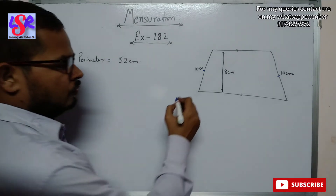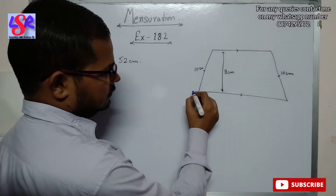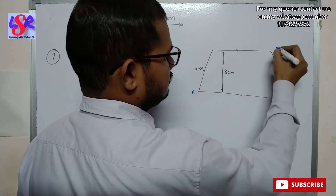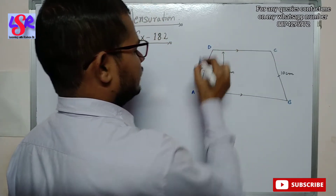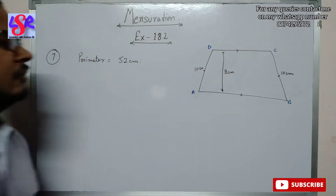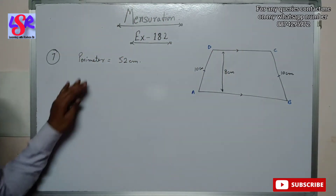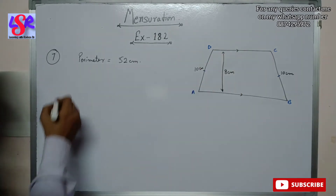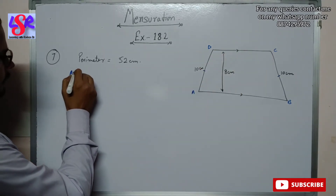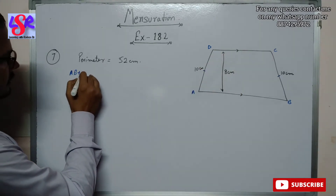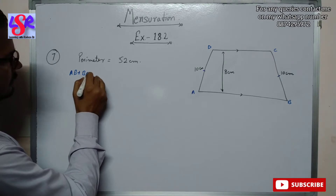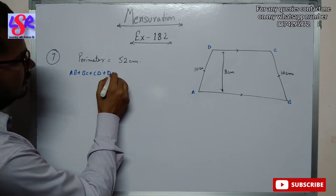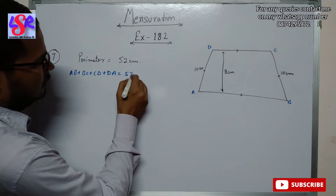First of all we are going to name the figure as A, B, C and D. We know the perimeter is the sum of all the sides, therefore: AB + BC + CD + DA = 52.